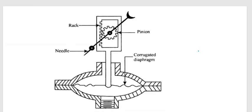As you can see in the drawing, here is a rack with a pinion, this is a needle, and below is a corrugated diaphragm. When pressure is applied here, it causes this diaphragm to move up, and this upward movement of the diaphragm causes the pinion and the rack to have a particular movement, thereby causing the needle to move on a scale, and therefore the pressure reading can be noted.